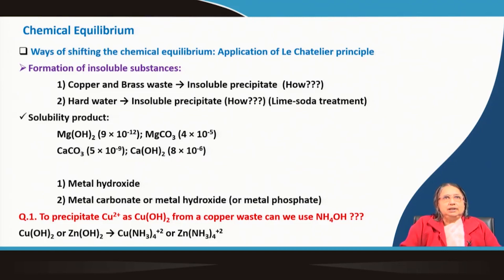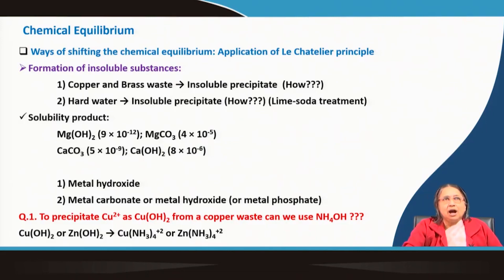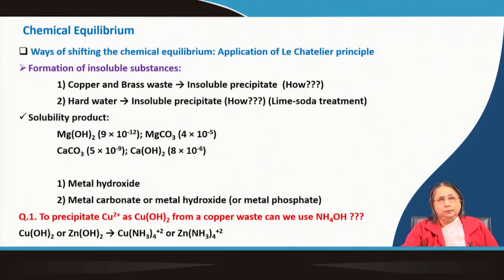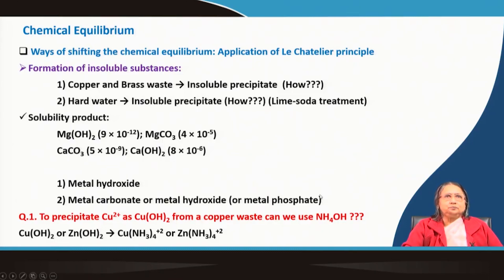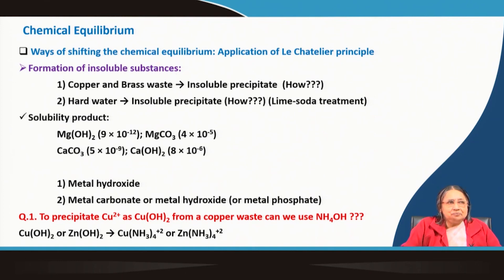Shifting chemical equilibrium has enormous applications in environmental engineering and must be properly understood for problem solving. One key method is the formation of insoluble substances. For example, in copper or brass waste water, copper ions or zinc ions may be present and need to be removed.